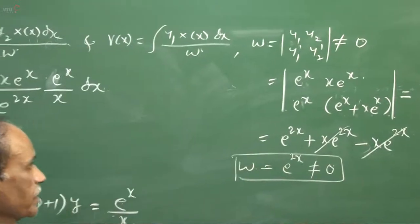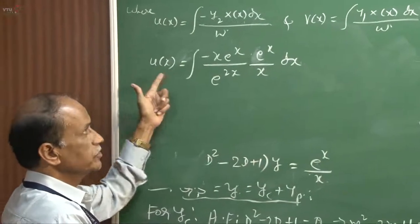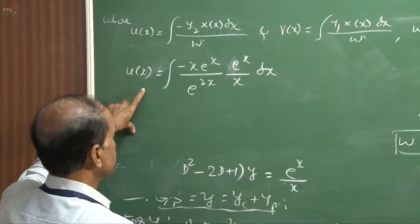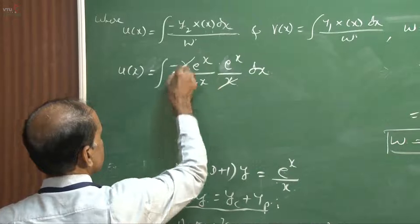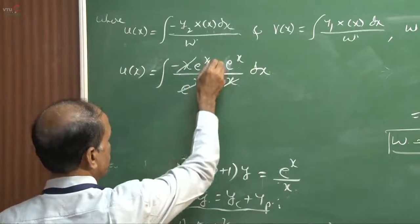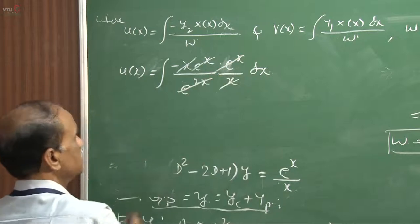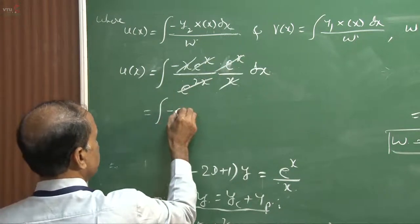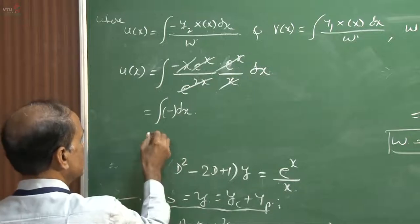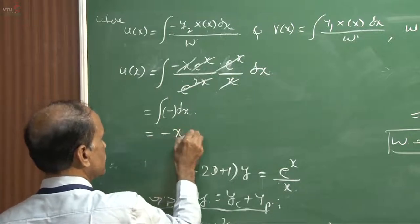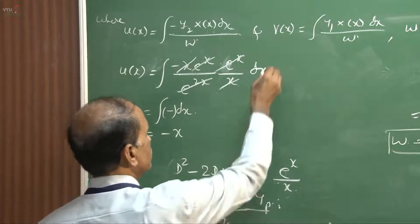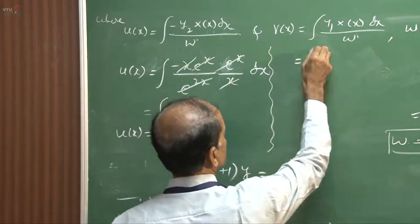Since the Wronskian is not equal to zero, we are permitted to go for the calculation of ux and then vx. With the help of these two values, the x terms cancel and e to the power x and e to the power x give e to the power 2x, which also cancels. We get the integration of minus 1 dx, which gives ux equal to minus x.